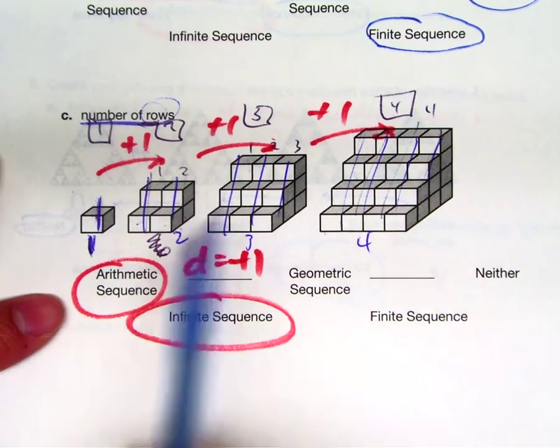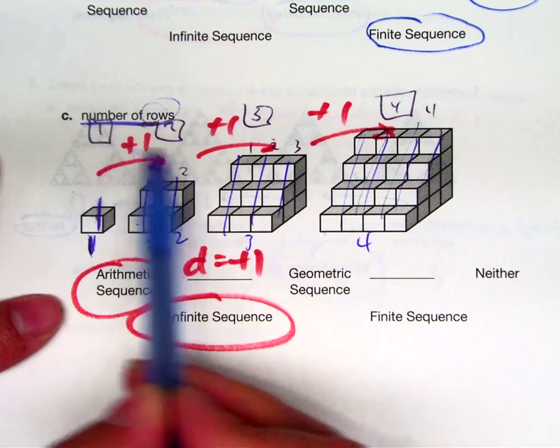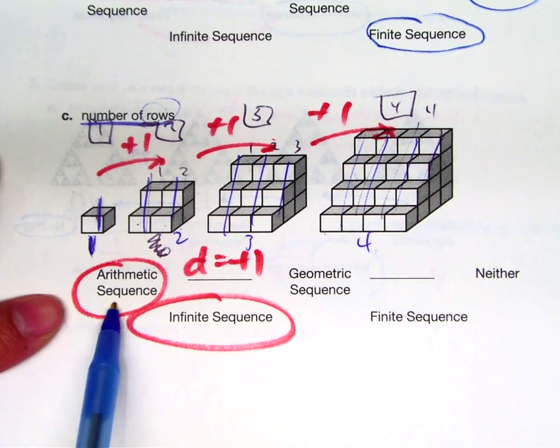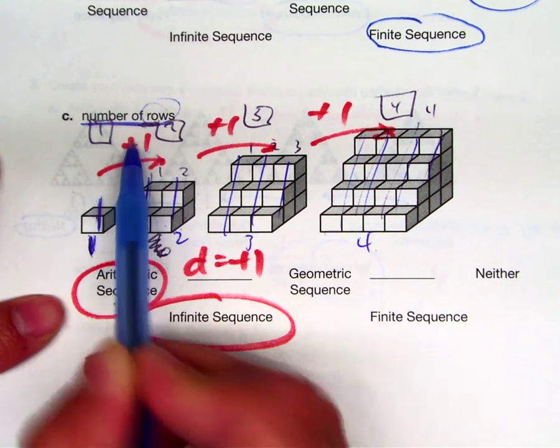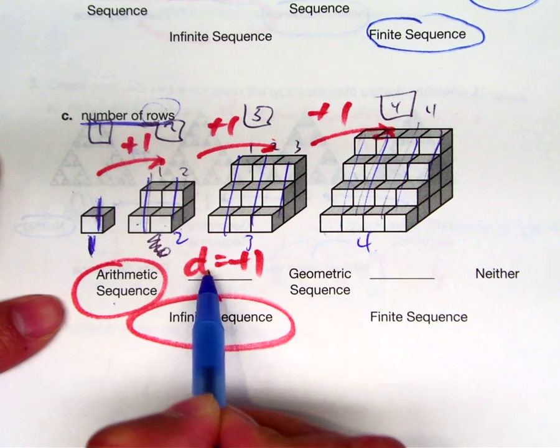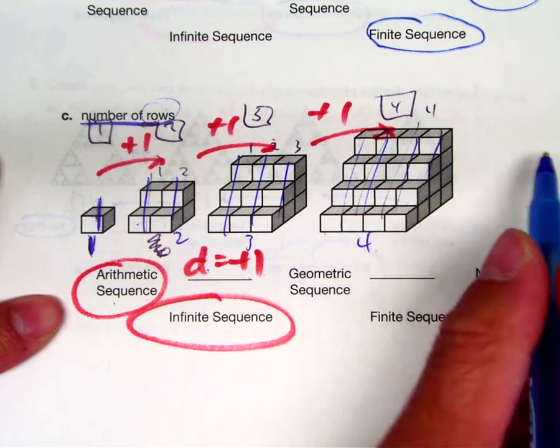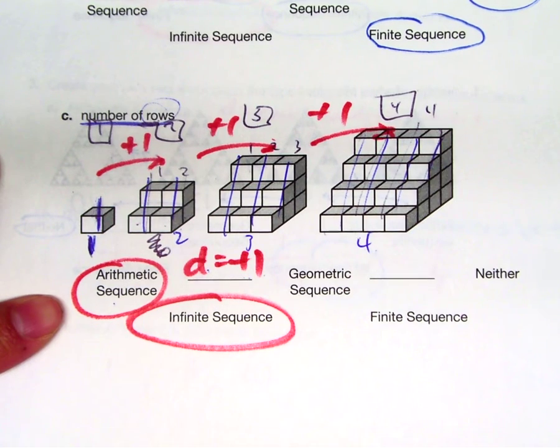So the number of layers is adding one to each of those. Therefore, it is an arithmetic because arithmetic is adding. D for the common difference, which is a plus one or one. This picture can keep going on forever. That's why it's an infinite.